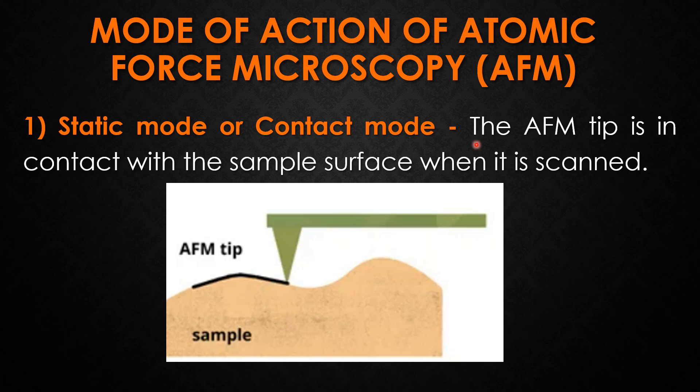In static mode or contact mode, the atomic force microscopy tip is in contact with the sample surface when it is scanned. The tip is dragged across the sample like a needle and the tip acts like an elastic, compressing and stretching when it encounters a force induced by the sample surface. The changes in the cantilever deflect the laser beam which is imaged on the photodetector. Soft materials are deflected further as the force is applied, so atomic force microscopy tips are generally made from soft materials.